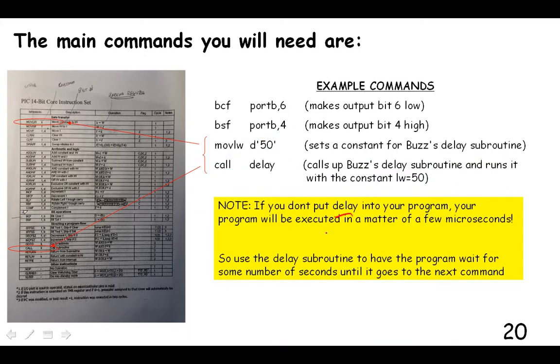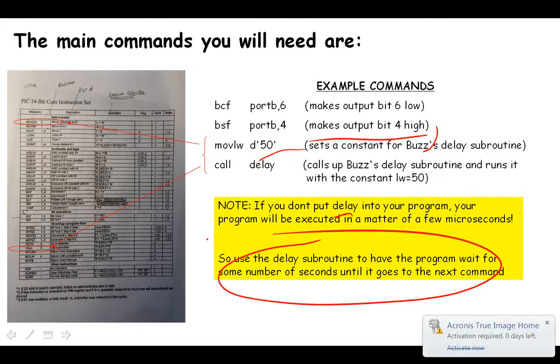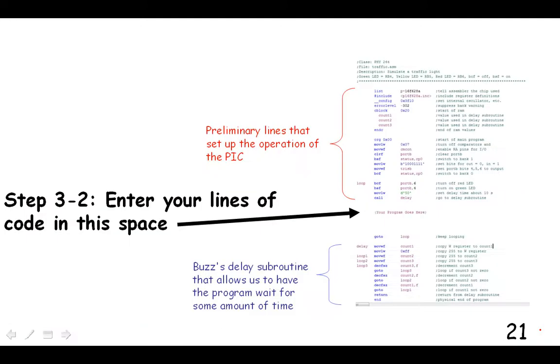Notice if you don't put a delay into your program that like, if you say you turned on one of your lights and then you turned it off immediately, it would be on and off for about one millionth of a second. So you wouldn't even see it flash on and off. Your brain is not that fast. So we have to use this delay subroutine to make the lights stay on for however long we want them to stay on.